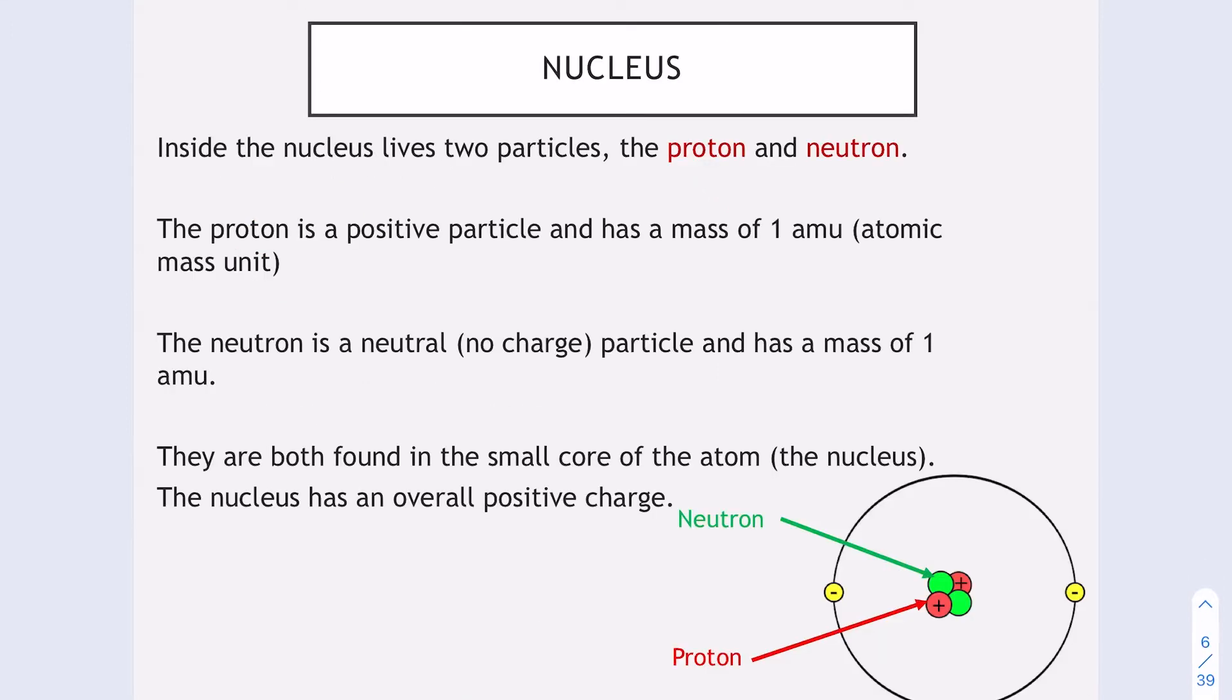What's inside the nucleus? Inside the nucleus we have the proton and the neutron. If you look at my diagram, the neutron is the one in green and the proton is the one in red. A proton is a positively charged particle and has a mass of one atomic mass unit. The neutron is neutral, it has no charge and also has a mass of one. They're both found in the nucleus and overall the nucleus has a positive charge.